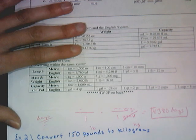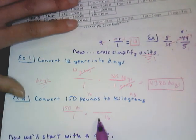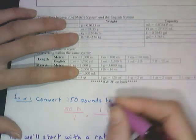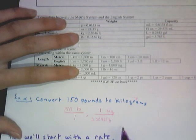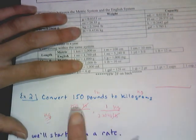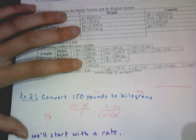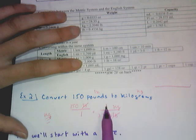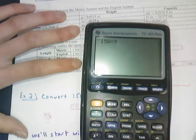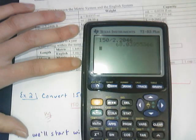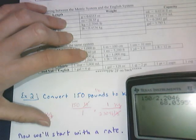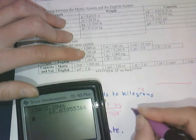And I want it to be kilograms. So for me to get pounds to cancel out, I've got to put it on the bottom. And there is a factor that goes straight to kilograms. One kilogram is 2.2046 pounds. So my pounds cancel out. The thing that I'm left with is kilograms. So I know that I'm done. So now this is multiplication. 150 times 1 divided by 2.2046, that's a calculator issue. 150 divided by 2.2046, and there's your answer. To the nearest hundredth is 68.04 kilograms.